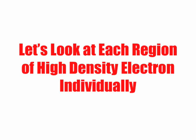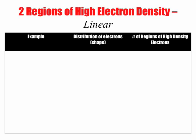Let's look at each region of high density electrons individually. First example we had were two regions of high electron density, and that meant that we had a linear shape. Here's an example, BeCl2.